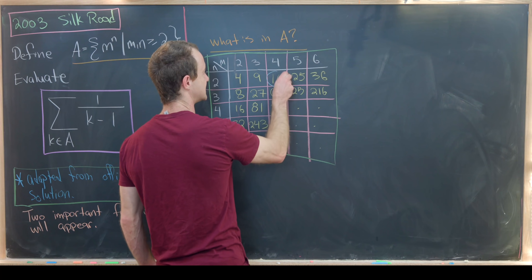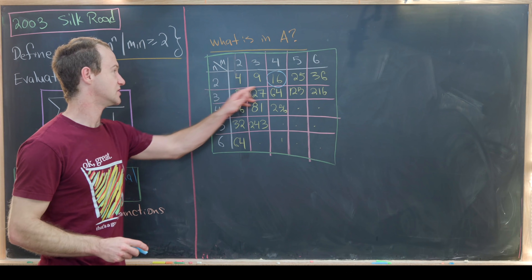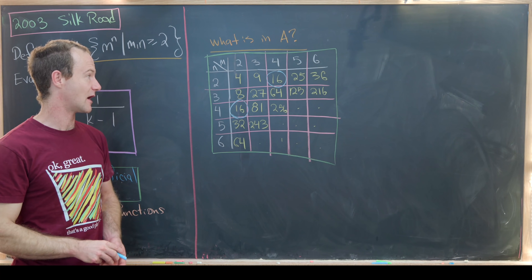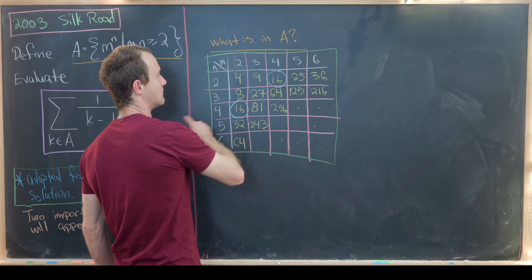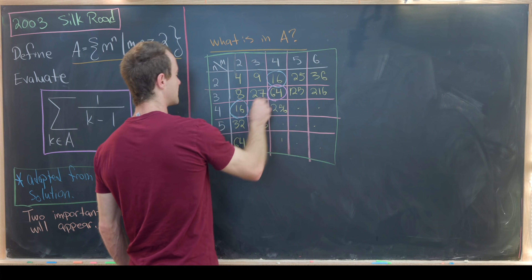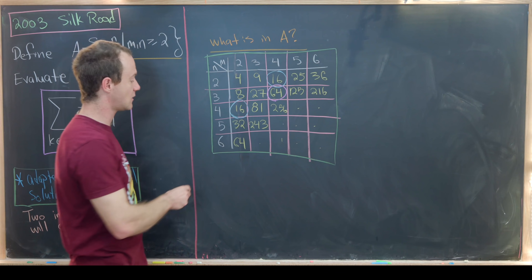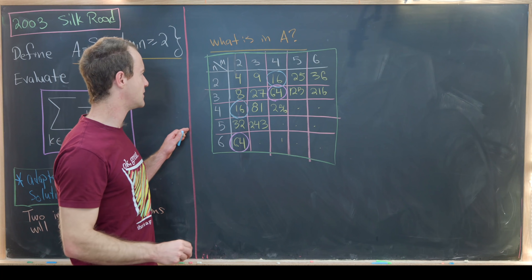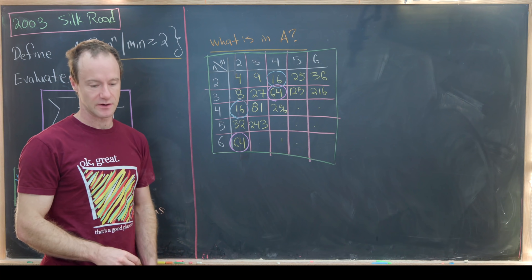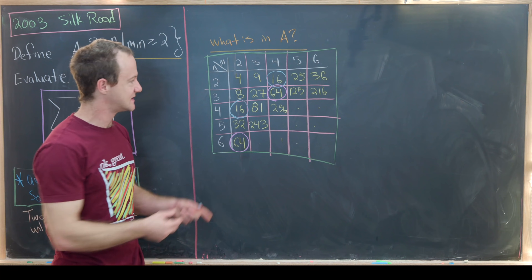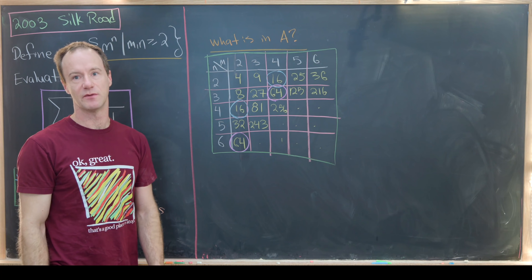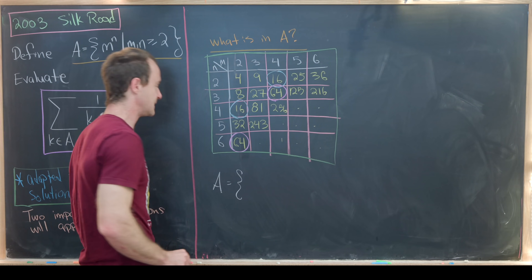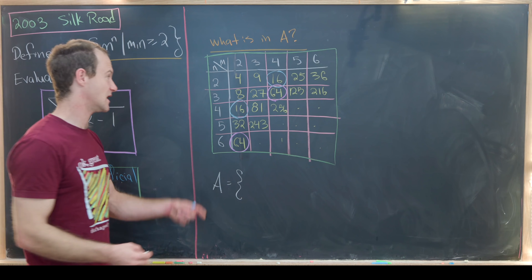For instance, the number 16 appears as 2 to the fourth power and also as 4 to the second power. Furthermore, 64 will appear as 4 cubed, also as 2 to the sixth, and also as 8 squared. So on this chart we have over-counted some of the elements from A. When we throw out all of the double counting, A contains elements of this form.